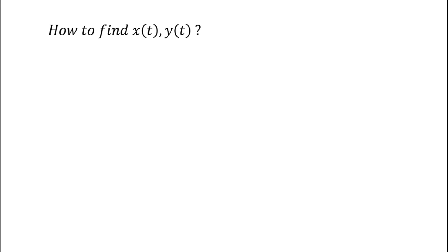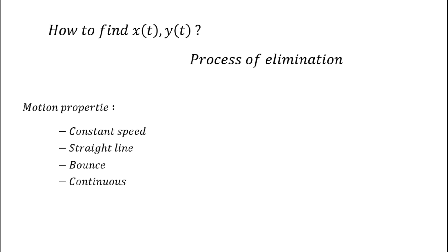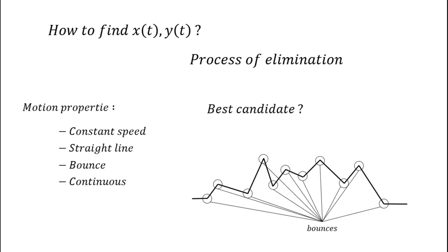So let's begin the resolution. To find the function x and y, I will proceed by elimination. I will show you that from what we know about the motion properties, there can be only one class of function x and y. We know that the trajectory is at constant speed, composed only of straight lines and eventually some bounces, and it is continuous. So x and y components can be anything else than sections of straight line continuous with bounces in the middle. And this kind of function actually has a name: the piecewise linear function, our first class of function F1.